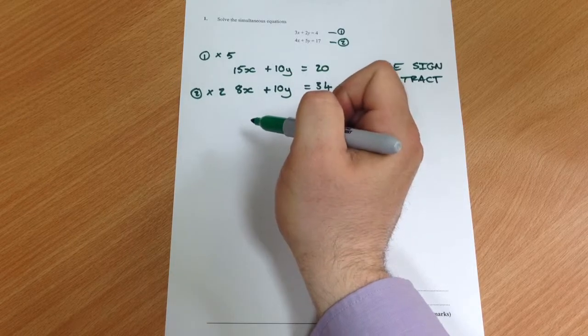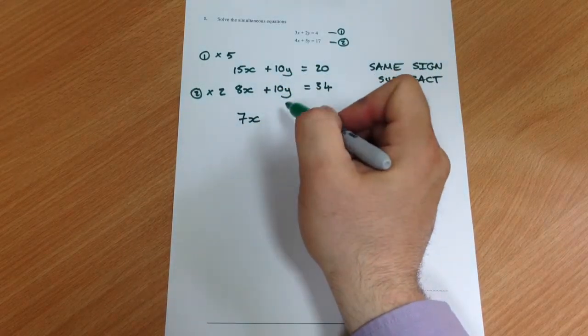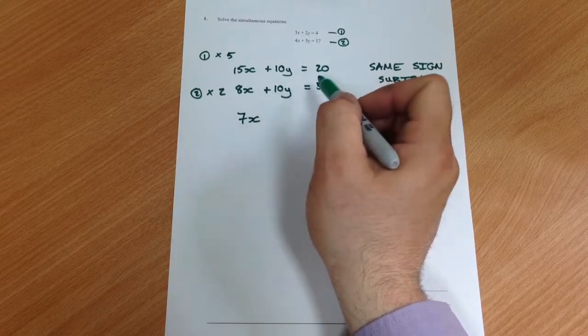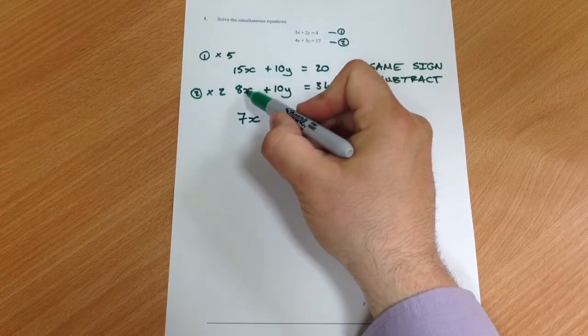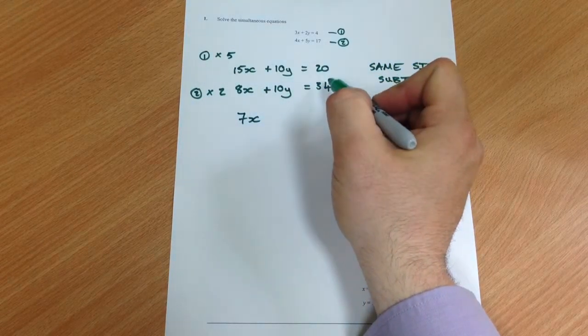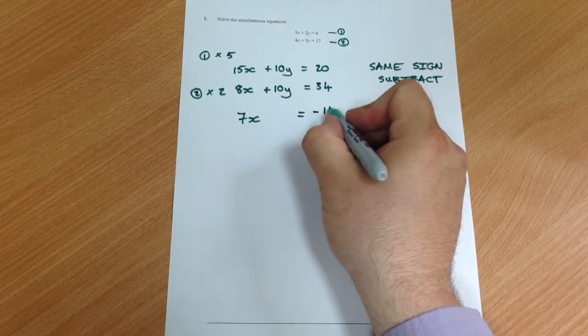So we're going to do 15x take away 8x which leaves us with 7x. 10y take away 10y is 0, it cancels out and disappears. Now this is where you have to be careful because we've done 15 take away 8, we've got to do 20 take away 34 which leaves us with negative 14.